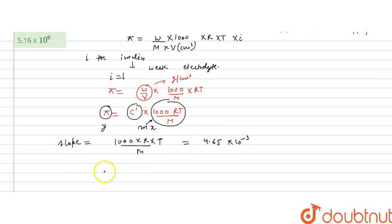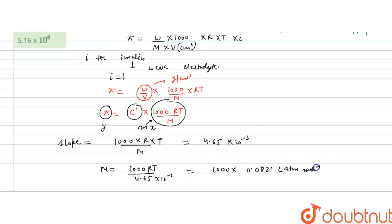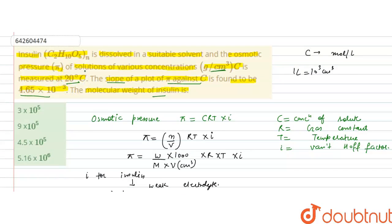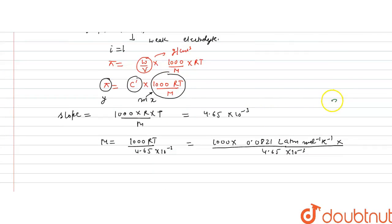So we can calculate the molecular weight: M = 1000·RT / (4.65 × 10⁻³). The value of R is 0.0821 litre·atmosphere per mole per kelvin. The temperature is given as 20 degrees Celsius, which in kelvin is 20 + 273 = 293 K. So kelvin cancels with per kelvin.